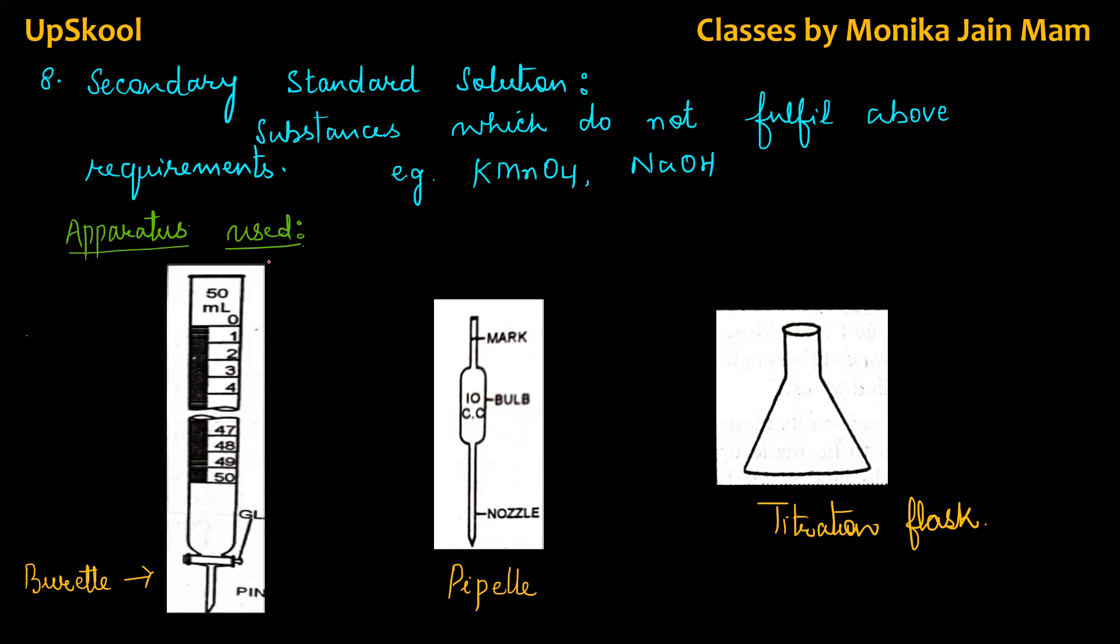Now here apparatus used is, one is burette, it is of 50 ml, top 0, bottom is 50. One is pipette, the pipette may be 10 ml or in some labs it is 20 ml. Other one is, third one is titration flask, in which we will perform the titration. No doubt, apart from this we have funnel, burette stand, but these are the three main apparatus about which we are talking.